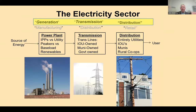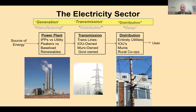The electricity sector is made up of three sub-sectors: generation, transmission, and distribution. Generation is like manufacturing in a traditional industrial sector. Transmission is like distribution in other industries. In electricity, the word 'distribution' actually refers to the local, retail delivery of electricity to end users — not the movement from maker to consumer. There's specific terminology used for power plants, transmission infrastructure, and distribution systems.